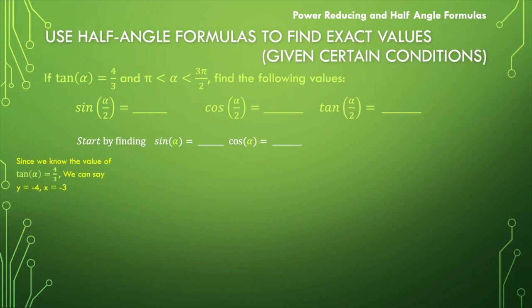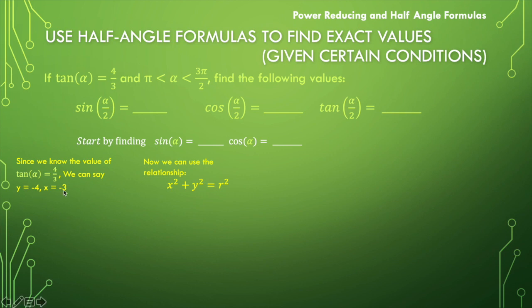If the tangent of alpha is 4 over 3, then x and y would have to be negative in the third quadrant, so x would be negative 3 while y is negative 4. We're going to use the relationship x squared plus y squared equals r squared. We substitute in x = -3 and y = -4, and we end up with r squared equal to 25. That means r would be plus or minus 5, but in this context r is always positive, so r is 5.